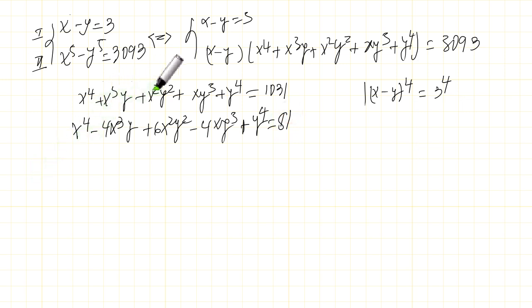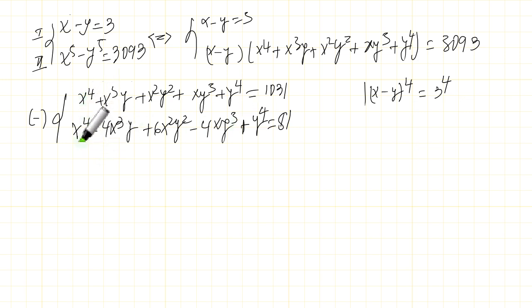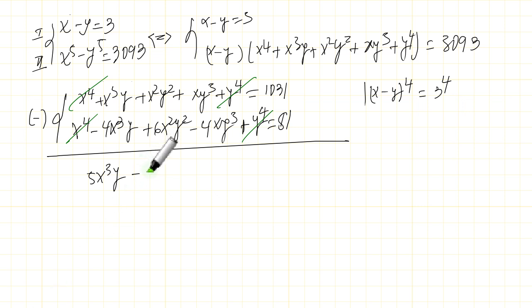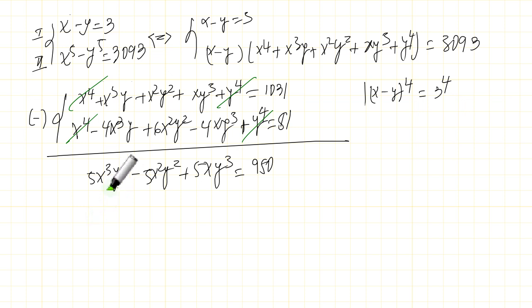Now I subtract this expansion from the earlier result. The x⁴ and y⁴ terms cancel. We get 5x³y minus 5x²y² plus 5xy³ equals 950. Dividing both sides by 5 gives x³y minus x²y² plus xy³ equals 190.